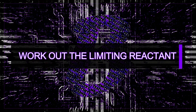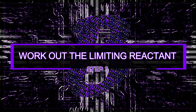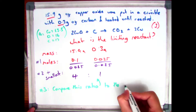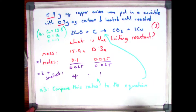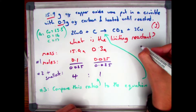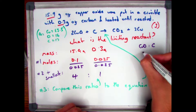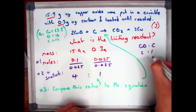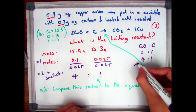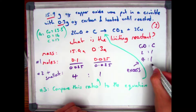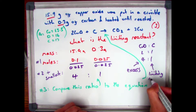The final step is to work out the limiting reactant. To do that, compare the ratios of what you've just worked out against the balanced symbol equation. Comparing copper oxide to carbon, the balanced equation gives a ratio of 2 to 1. In the ratio I've just worked out, it's 4 to 1. Since 4 to 1 is bigger, that means the copper oxide is in excess. So my carbon is the same amount, and therefore carbon must be the limiting reactant.